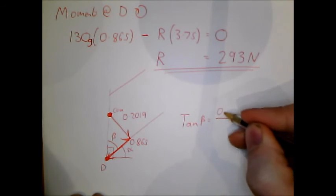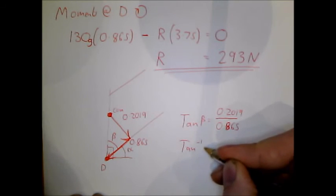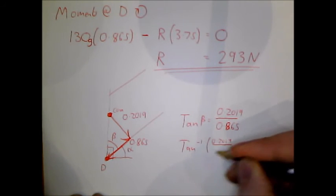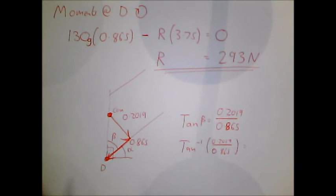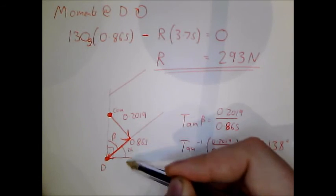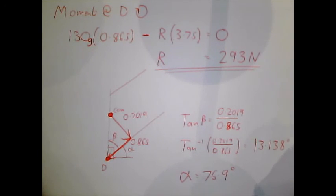So inverse tan will yield us, inverse tan 0.2019 over 0.865, gives us 13.138 degrees. We don't want beta, we want alpha. So take 90 off of this. And this gives us a value of 76.9 degrees to the horizontal.